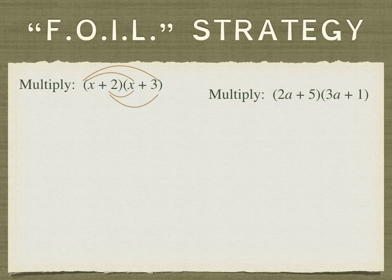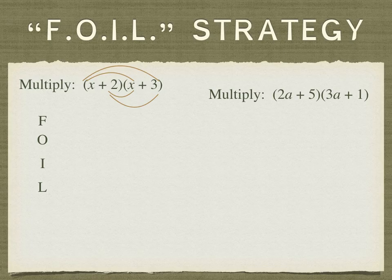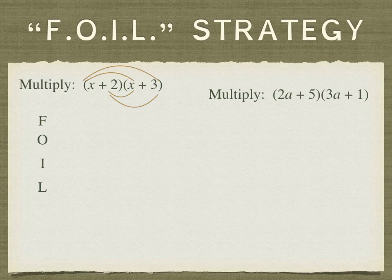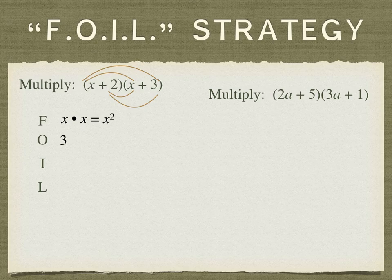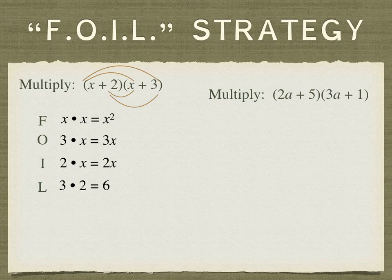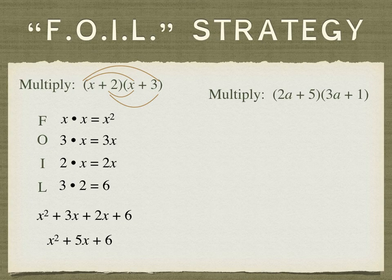Well you can think of the x times x as multiplying the first two terms and the x times 3 as the outside two terms. 2x would be the inside terms and 2 times 3 would be the last two terms. So this FOIL is just a way of remembering to include these sub products. And some people find it helpful to write down the letters and write down their products. And we're just going to remember to combine those middle terms and we get x squared plus 5x plus 6.